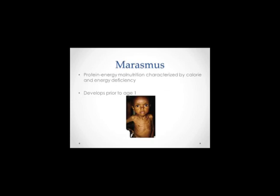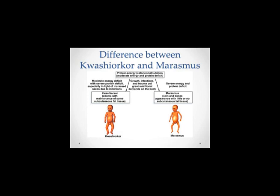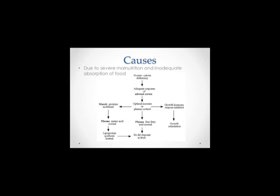The second type of protein energy malnutrition is called Marasmus. Marasmus is a protein energy malnutrition characterized by calorie and energy deficiency, and it develops prior to the first year of life. It is important to note the difference: Kwashiorkor is characterized by moderate energy deficiency but severe protein deficiency, whereas Marasmus is characterized by both severe energy deficiency and protein deficiency. Marasmus is caused by severe malnutrition and inadequate food absorption. The pathway shows that protein-calorie deficiency leads to increased plasma cortisol, which can cause growth retardation and a lack of fat deposited in the liver.